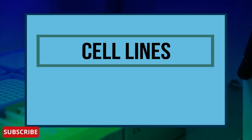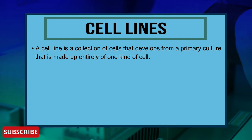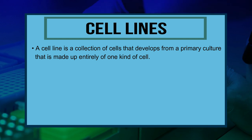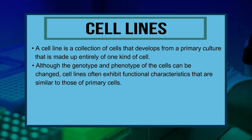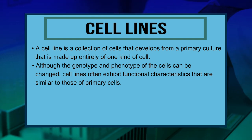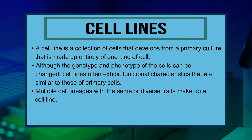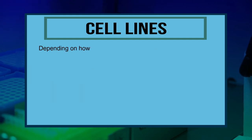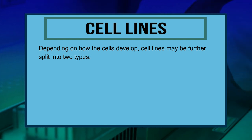A cell line is a collection of cells that develop from a primary culture made up entirely of one kind of cell. Although the genotype and phenotype of cells can be changed, cell lines often exhibit functional characteristics similar to primary cells. Multiple cell lineages with the same or diverse traits make up a cell line. Depending on how the cells develop, cell lines may be split into two types.